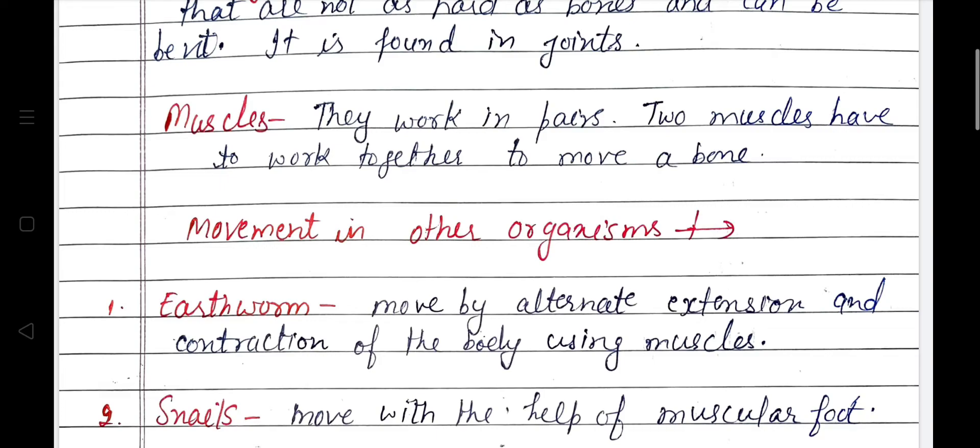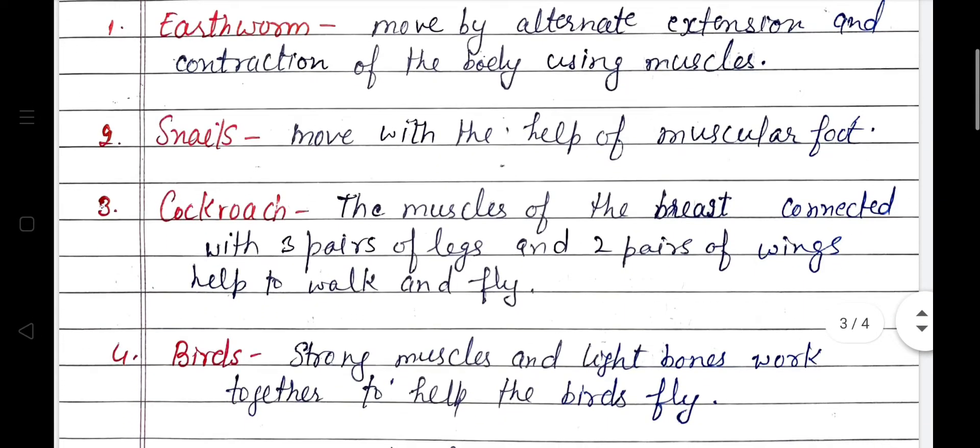Movement in other organisms: earthworm moves by alternate extension and contraction of the body using muscles. Snails move with the help of a muscular foot. Cockroach — the muscles of the breast connected with three pairs of legs and two pairs of wings help it to walk and fly.